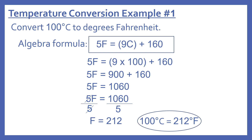We do what's in parentheses first: 9 times 100 is 900, then plus 160 gives us 1060. So 5F equals 1060. In algebra, what we do to one side we have to do to the other. We want to get F by itself, so we divide by 5 — because 5 divided by 5 equals 1. So 5F divided by 5 gives us F.